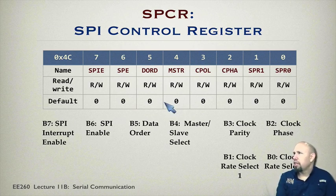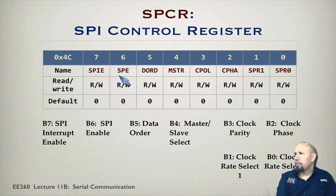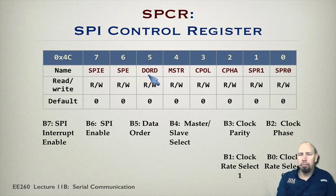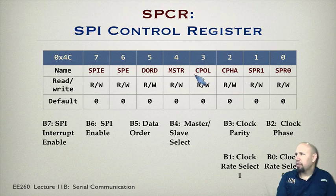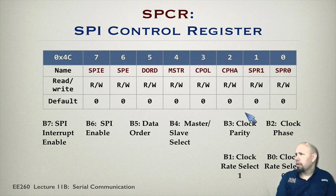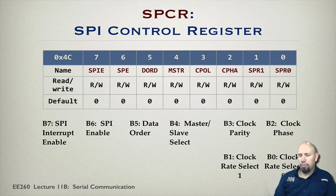Here are the SPI registers. The SPI control register includes: SPI interrupt enable; SPI enable, which must be set for any SPI communication; the data order bit, selecting least or most significant bit first; the master/slave select bit; the CPOL (polarity) bit; the CPHA (phase) bit — polarity and phase are set by these bits; and the SPR rate bits (SPR0, SPR1) which select the clock rate.